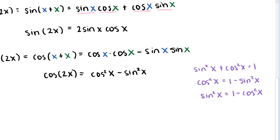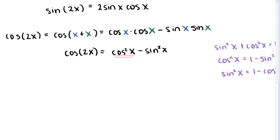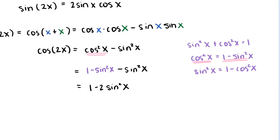This is always true. Sometimes it's beneficial to have the double angle identity in terms of just sine or just cosine on the right-hand side. So here we can replace cosine squared of x with its equivalent, 1 minus sine squared of x. That gives us 1 minus sine squared of x, minus sine squared of x, which simplifies to 1 minus 2 sine squared of x. So this is our second double angle identity for cosine: cosine of 2x equals 1 minus 2 sine squared of x.